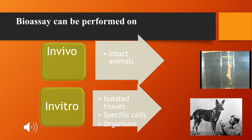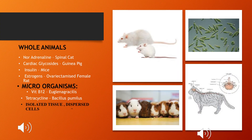A bioassay can be performed under in vivo conditions (intact animals) or in vitro conditions (isolated tissues, specific cells, or specific organisms). Bioassays can also be conducted on whole animals — for example, non-adrenaline assay on the spinal cat, cardiac glycoside assay on guinea pig, and insulin or estrogen assays on mice and rats. Microorganisms can also be used — for example, Euglena gracilis for vitamin B12 and Bacillus pumilus for tetracycline. Bioassay can also be done on isolated tissues such as frog rectus abdominus muscle, guinea pig ileum, rat uterus, or by using dispersed cells.